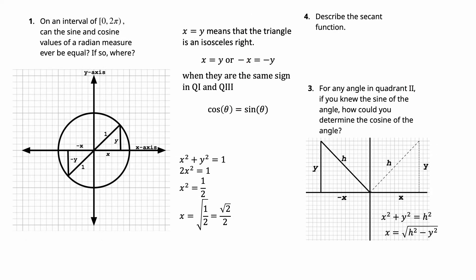For any angle in quadrant 2, if you know the sine of the angle, you can determine the cosine using the Pythagorean theorem. Take the reference angle, push it over to the first quadrant, and figure out the adjacent side. Since you know the sine (opposite/hypotenuse), calculate the adjacent side by taking √(h² - y²), then make it negative for quadrant 2, and that gives you the cosine.